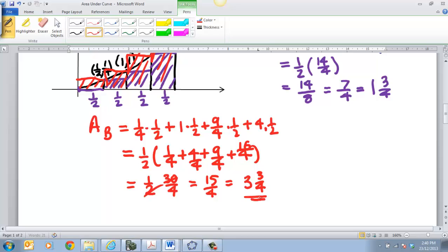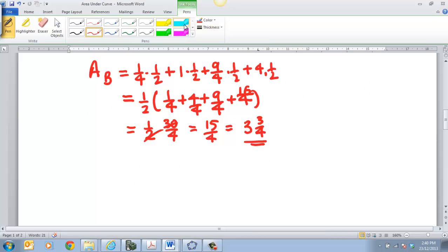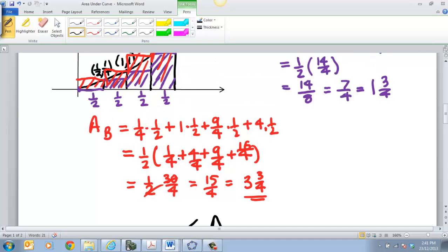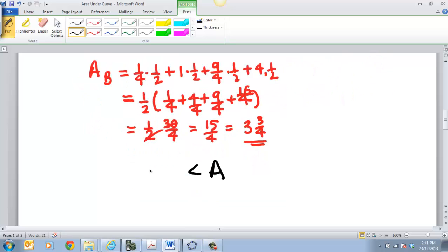So what we can say is that our area is greater than our lower value, which we know is one and three quarters or 1.75, and we know it's less than 3.75. So what we know is that our true area is somewhere between there.